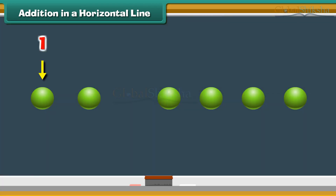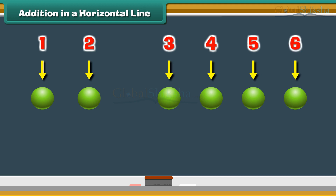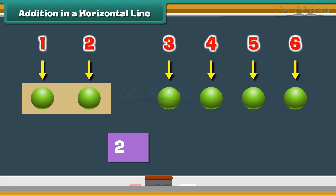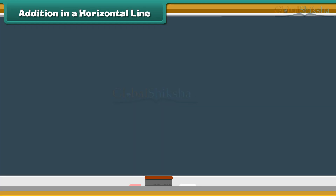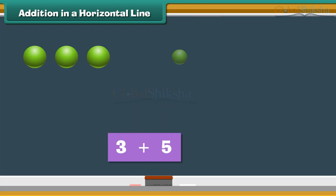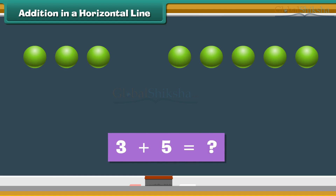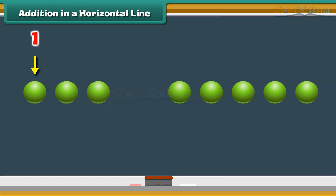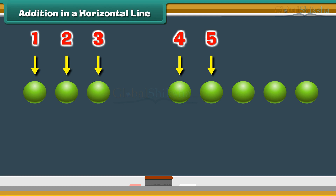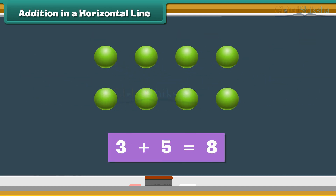One, two, three, four, five, six. Therefore, two plus four is six. What is three plus five? Count the dots: one, two, three, four, five, six, seven, eight. Three plus five is eight.